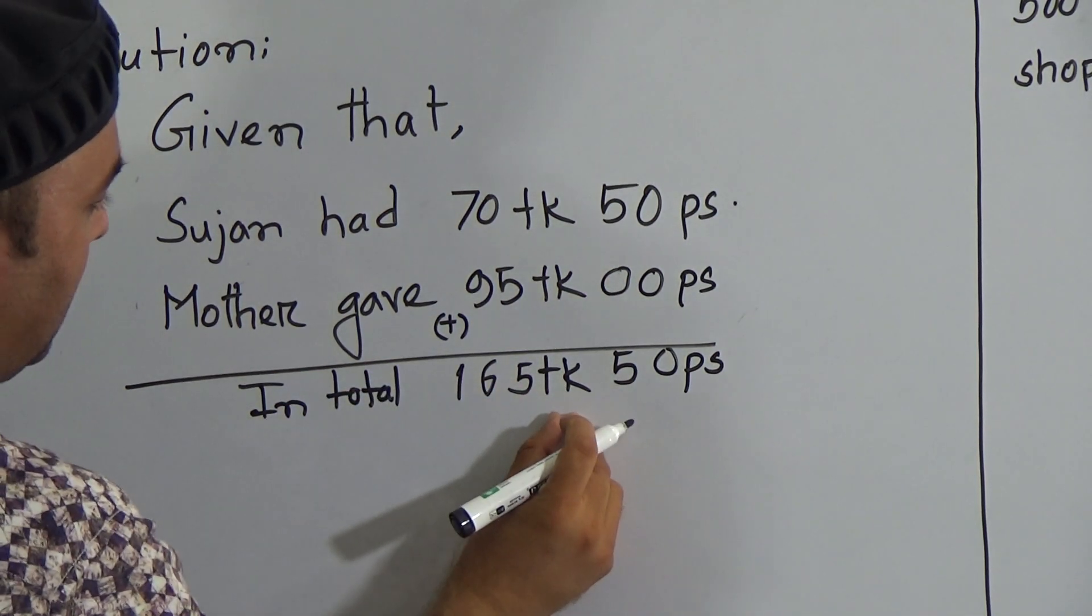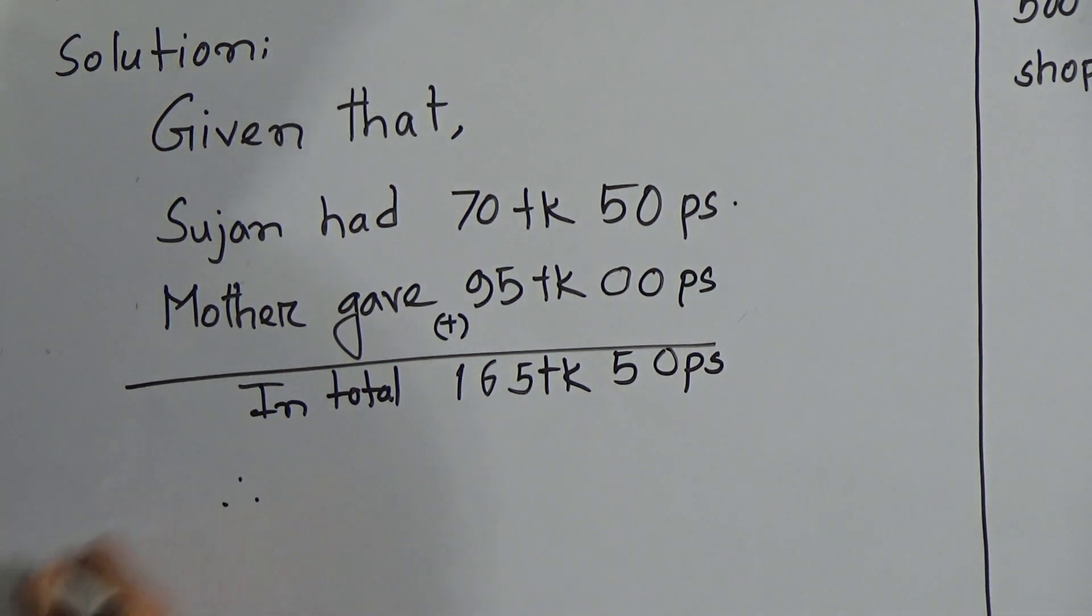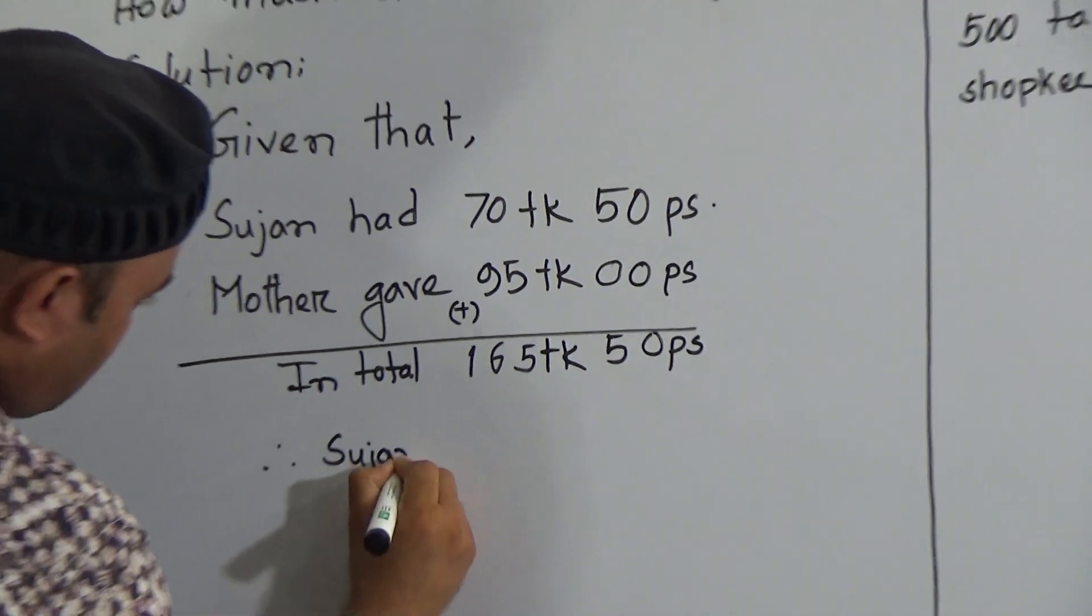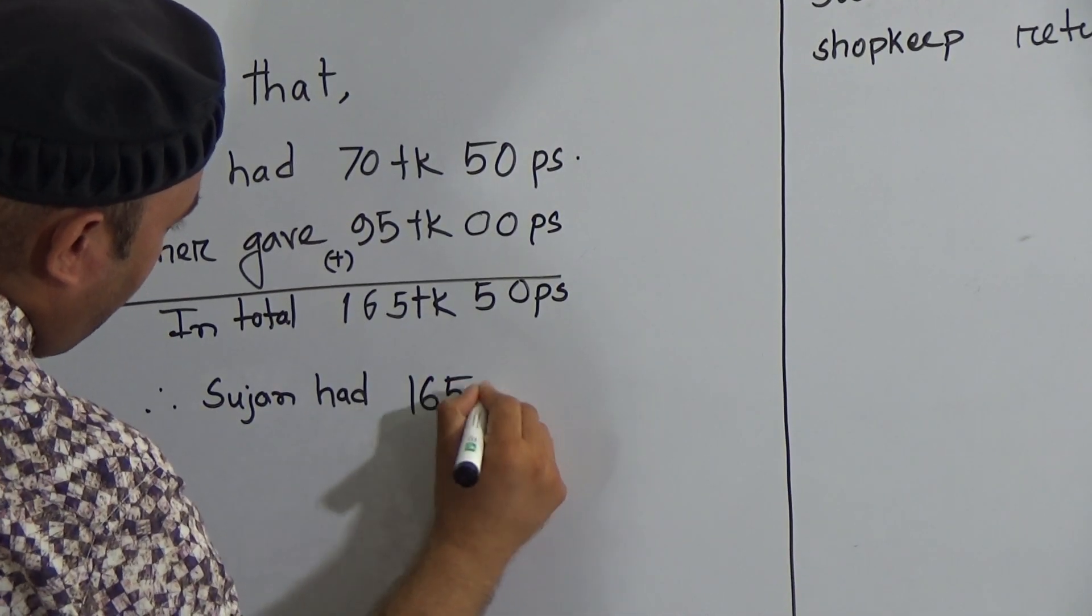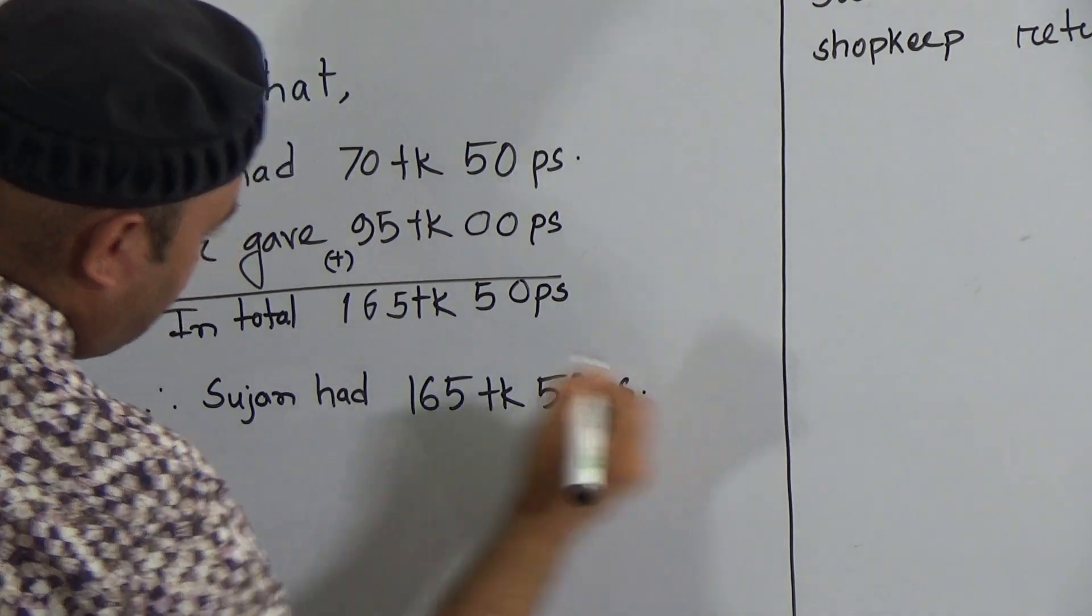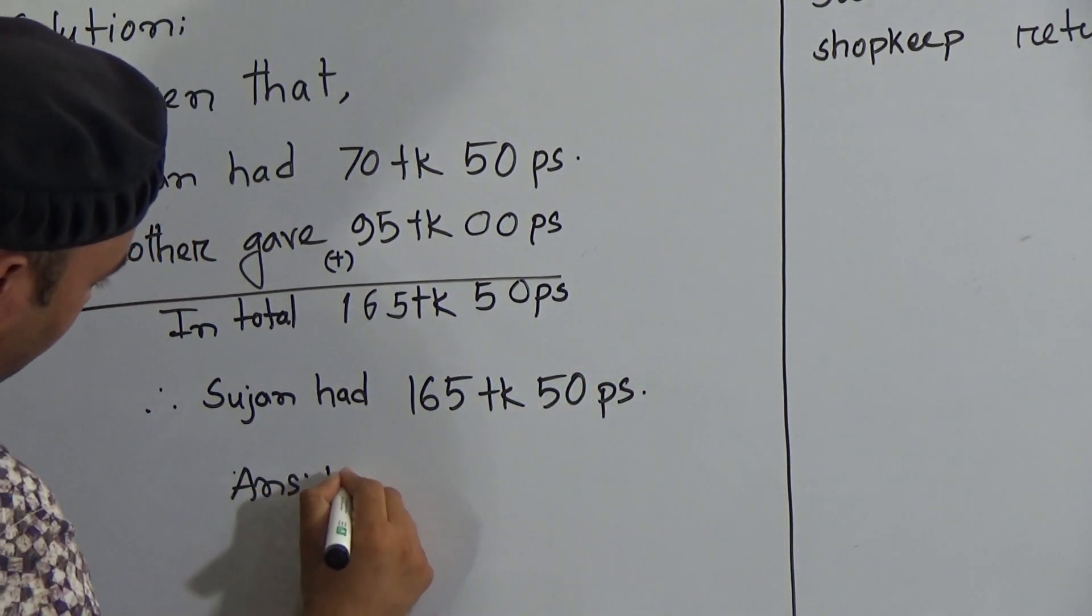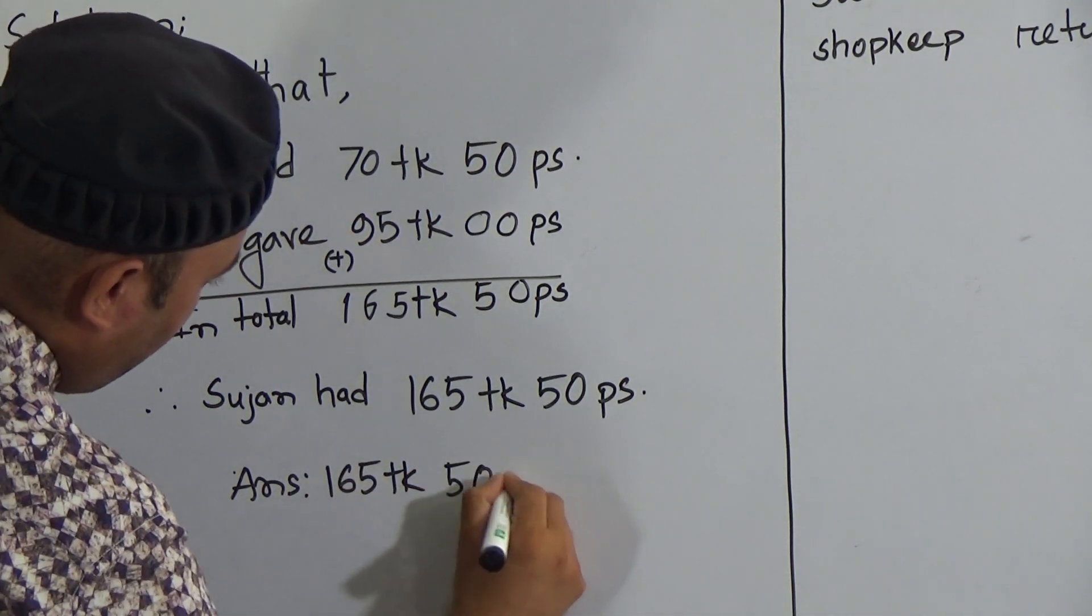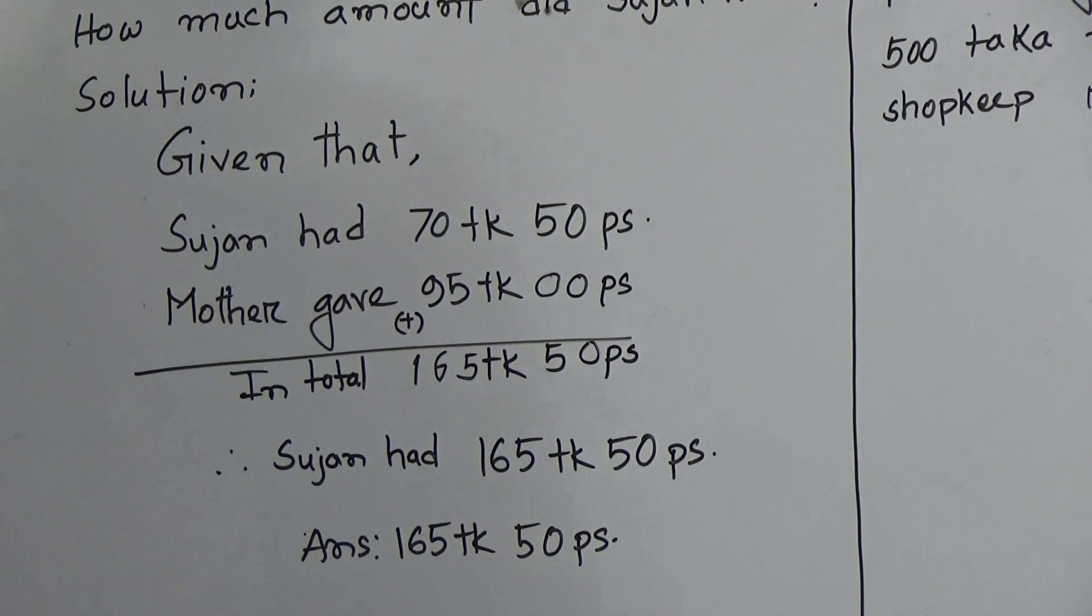So in total, 165 taka and 50 poises. Therefore Sujan had 165 taka 50 poises, so the correct answer is 165 taka 50 poises. Now my dear students, hope you understood this one. Let us go to the next question.